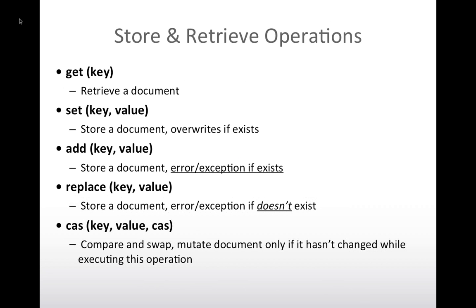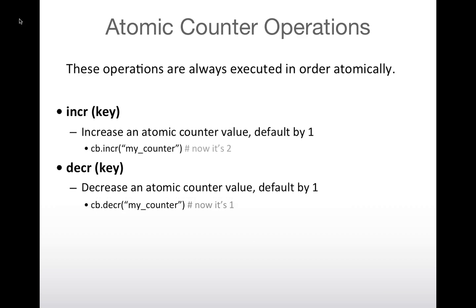CAS is compare-and-swap — optimistic concurrency where you can only change a document if the CAS value hasn't changed. We also have lock for pessimistic concurrency, and you can unlock on set, add, replace, or via an explicit unlock method. We have atomic counters, extremely useful for games and similar use cases where you need transactional points or scores. They're executed atomically in order on the Couchbase server itself, so you can guarantee their order.